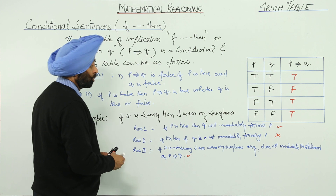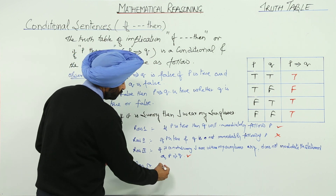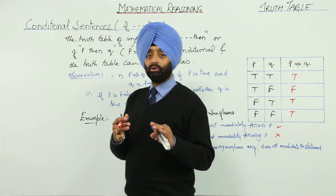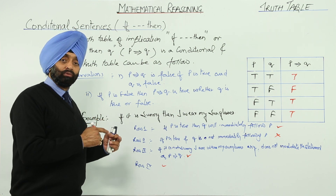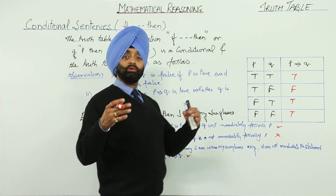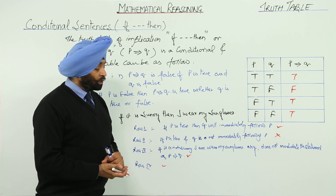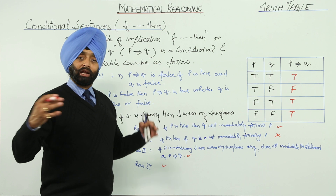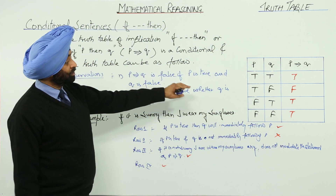And the last one, row 4, will also be true. Because it is not sunny and you are not wearing the sunglasses. Row 4 means that right from the beginning there was no sunny day — it was a cloudy day. So this is the conditional sentence, and this is the truth table for the conditional. We have to be especially careful about the third and fourth rows.